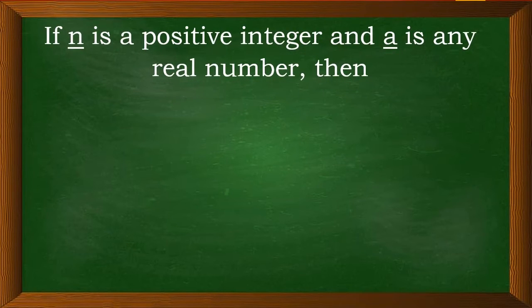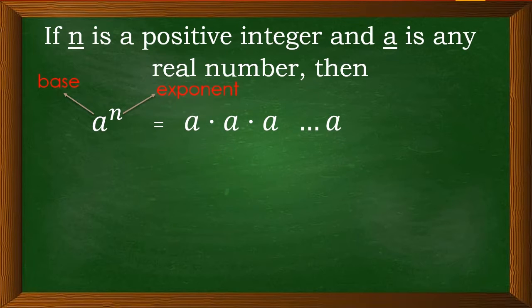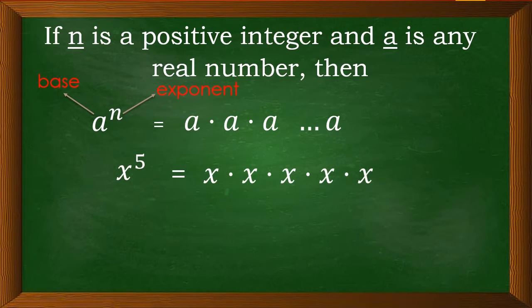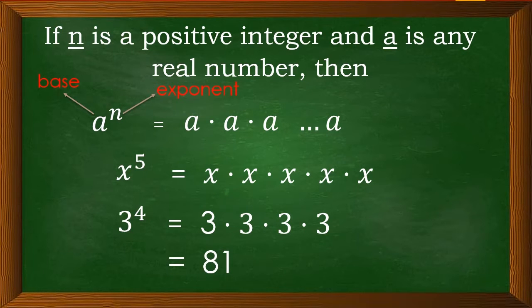If n is a positive integer and a is any real number, then a to the n, wherein a is the base and n is the exponent. The exponent of a number says how many times to use the number to be multiplied. That is, x raised to 5 is equal to x times x times x times x times x. Same as 3 to the 4th is equal to 3 times 3 times 3 times 3, which equals 81.